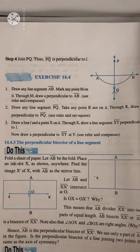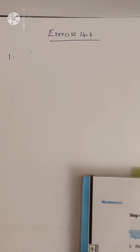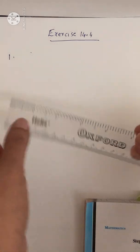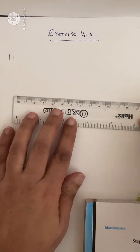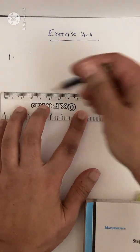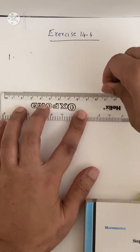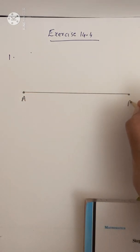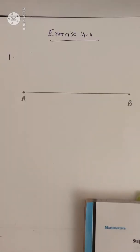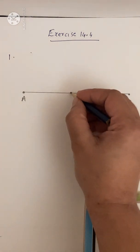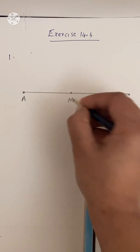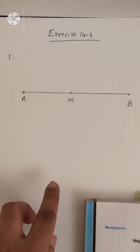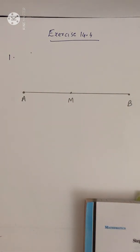The measurement is not given, so you can take any measurement and draw a line segment. Draw it and label the endpoints A and B. Now you have to mark any point M on it — you can mark M anywhere on the line segment. Through M, we need to draw a perpendicular to AB.